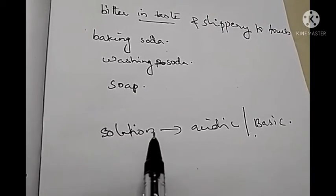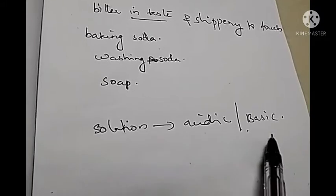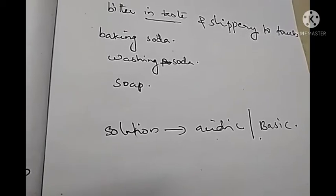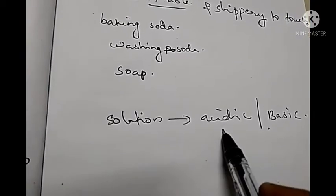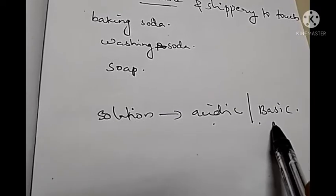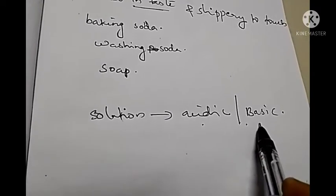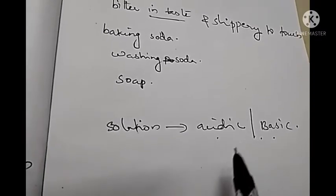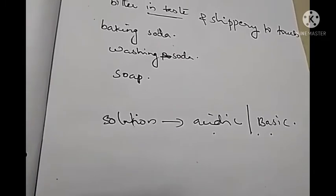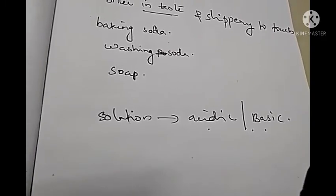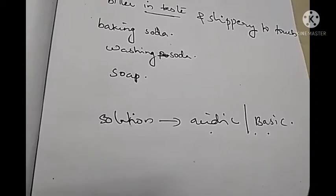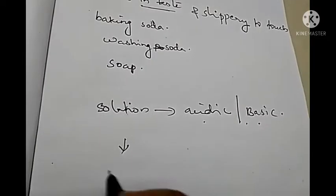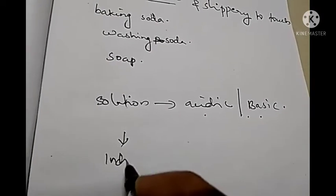If you are given a solution and asked to identify whether it is acidic or basic, how can we identify its nature? Of course, by tasting we can identify — if it is sour in taste, it is acidic; if it is bitter in taste, it is basic. But we cannot taste all substances, as some of them will be toxic or poisonous in nature. So, to identify the nature of the solution, we use some other special substances. They are known as indicators.